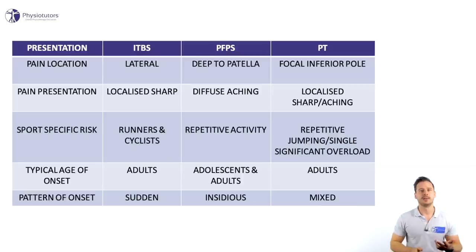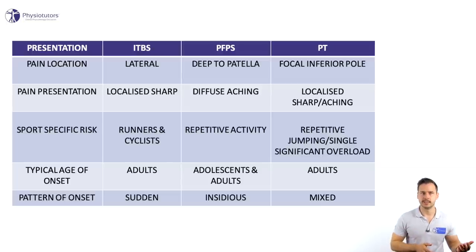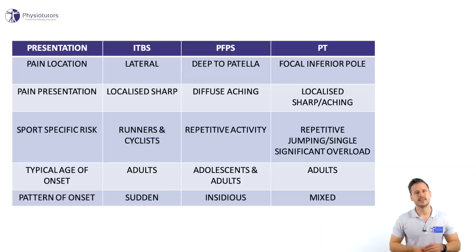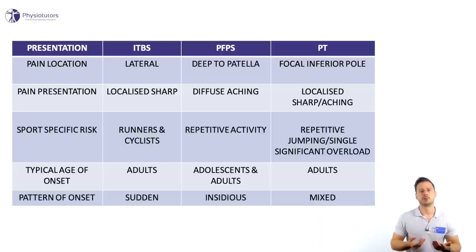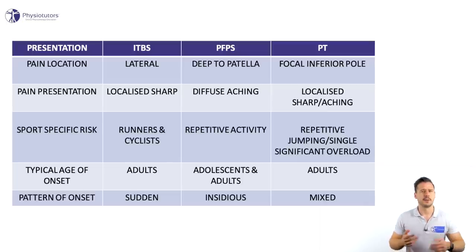Let's move on to the typical age of onset. ITBS and patellar tendinopathy are rather seen in adults, whereas PFPS is also prevalent in the adolescent population. Rathlev and colleagues conduct a ton of PFPS research in the adolescent population. Furthermore, if we had to describe the typical patient with PFPS, it would be a teenage female runner.